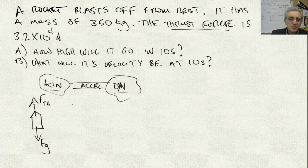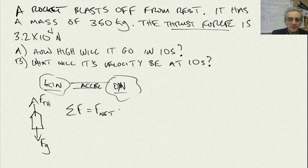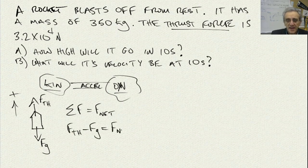So what do we do? We say summation of the forces equals our net force. Then we say, let's take up as our positive direction. So we'll say thrust force minus FG equals F net. Now we can substitute in some values here that we know. We can say thrust minus MG, which is force of gravity, equals MA.